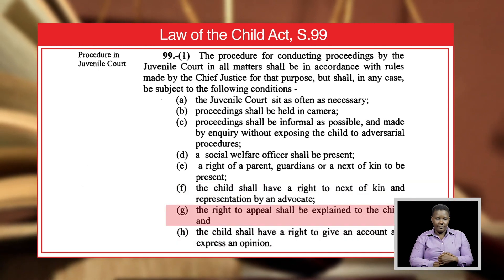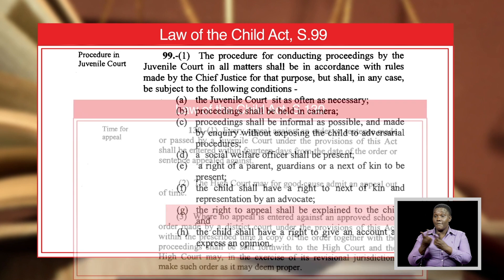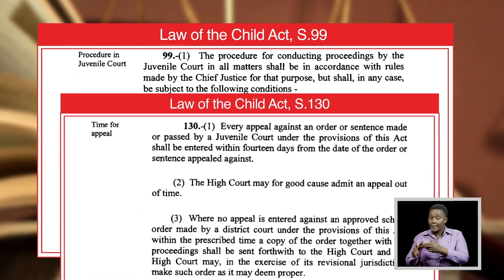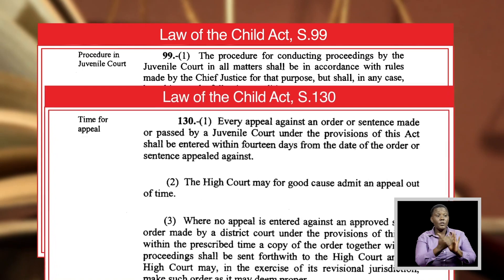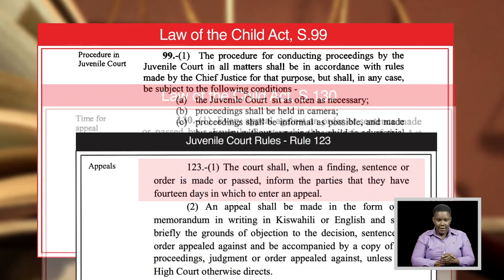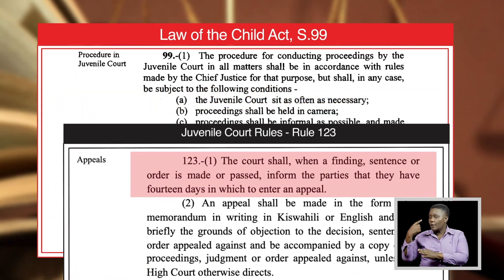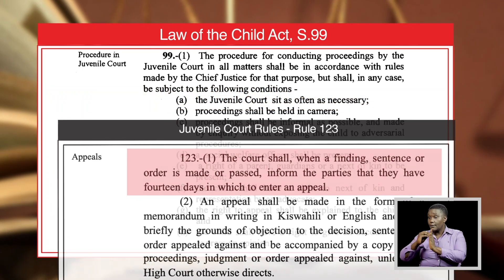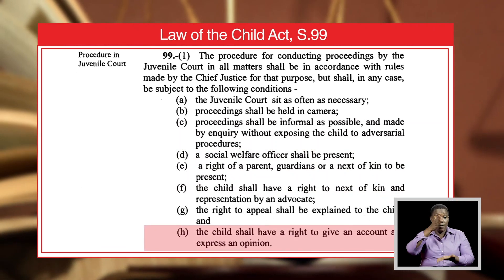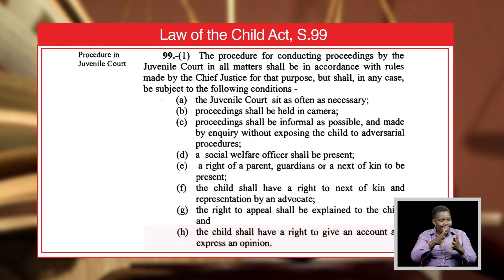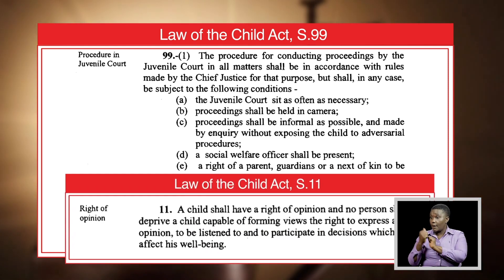The right to appeal shall be explained to the child, as supported under Section 130 of the Law of the Child Act and Rule 123, Subrule 1. The child shall also have a right to give an account and express an opinion, per Section 11 of the Law of the Child Act.